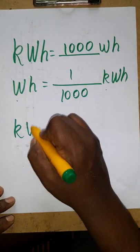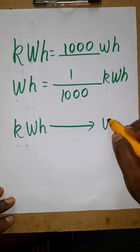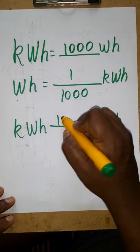If you want to convert kilowatt to watt, just kilowatt times 1000 watts.